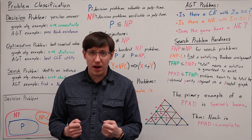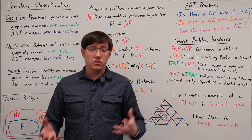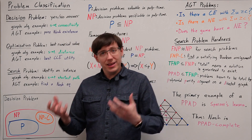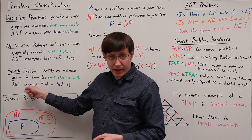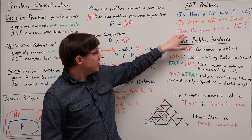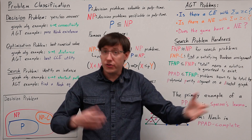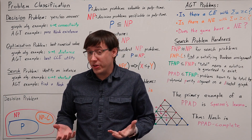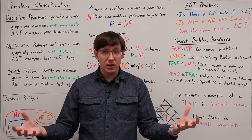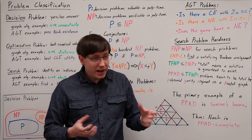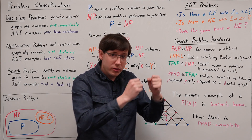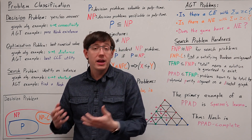Unfortunately, we still haven't pinned down the complexity of the problem we really care about, which is computing a Nash equilibrium in a particular game. The trouble is that for the Nash equilibrium problem, there isn't a natural correspondence between the search problem we really care about and the decision problem that complexity theory likes to study. Specifically, the natural statement of the decision problem — given a game, does it have a Nash equilibrium — is entirely trivial. My algorithm for that problem runs in constant time by just returning YES, since Nash's theorem gives us a proof that every game has an equilibrium.